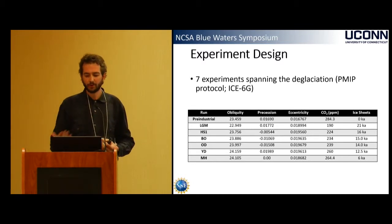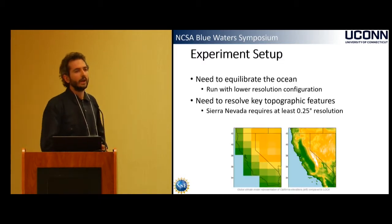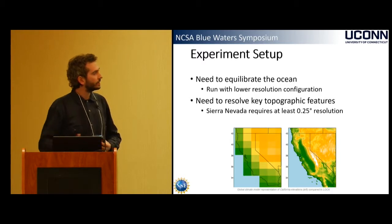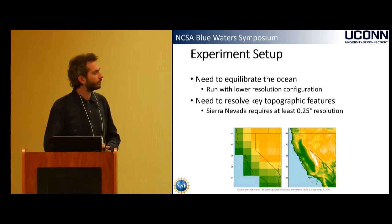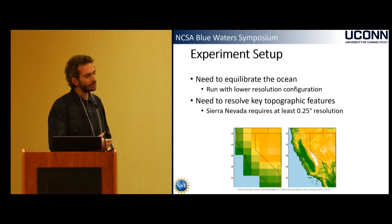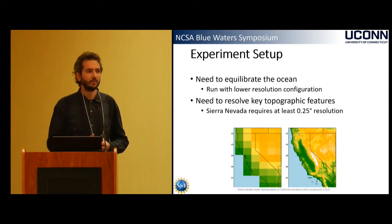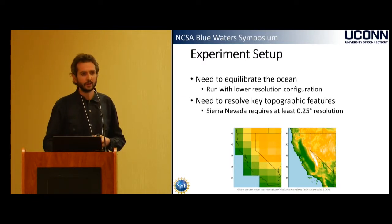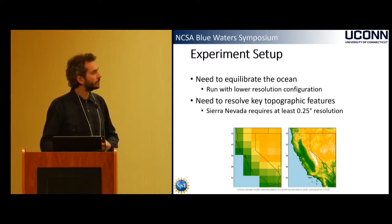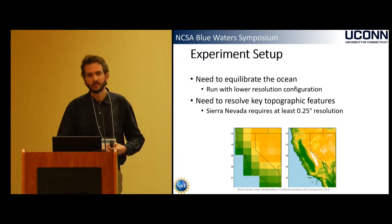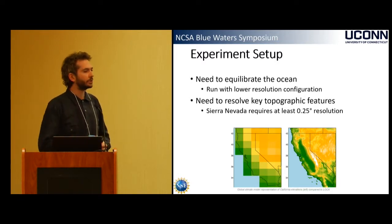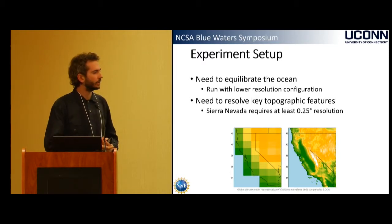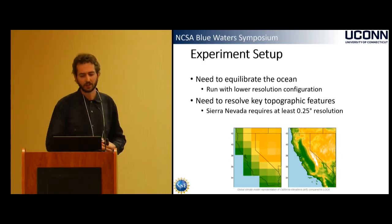We run these simulations for a long period of time for two reasons. First, we don't know the ocean initial conditions, so we start with a guess at the climate state and run for many thousands of years to equilibrate the ocean — quite time consuming and expensive. We do this with a lower-resolution version: two-degree atmosphere with one-degree ocean. Then, to get at regional-scale variability along the west coast of the US and better simulate hydroclimate changes, we need higher-resolution versions as well, which can be quite expensive.